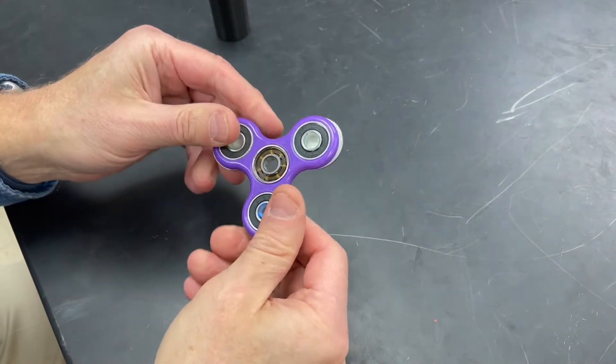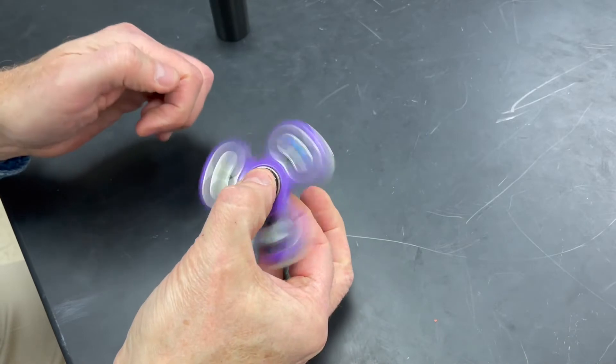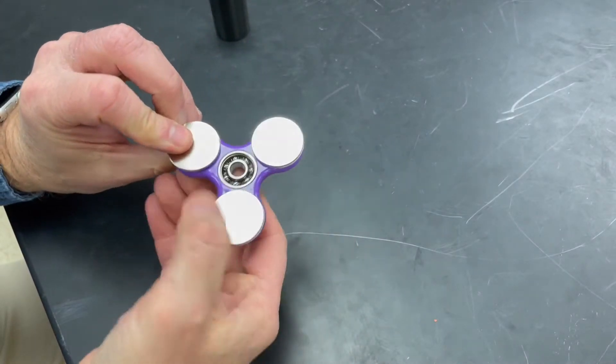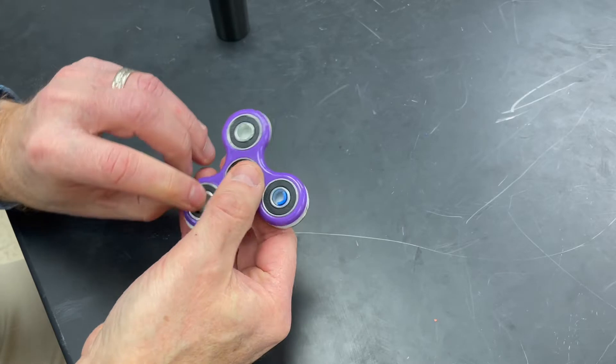By adding three powerful magnets to a fidget spinner, we found that we can easily generate enough electricity to light an LED light.